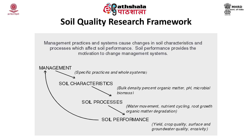The figure in the slide shows the soil quality research cycle, which depends upon soil performance and provides motivation to change management systems. For example, we have to take into account soil characteristics and properties. According to those properties, soil processes are undertaken, and through soil processes soil performance is increased. Once soil performance is increased, improved management is achieved. Similar to physical and chemical indicators, biological indicators have a relationship to soil functions and can evaluate soil functions to assess soil quality.